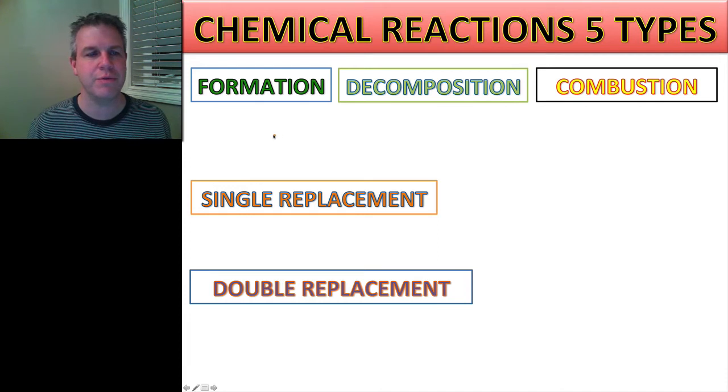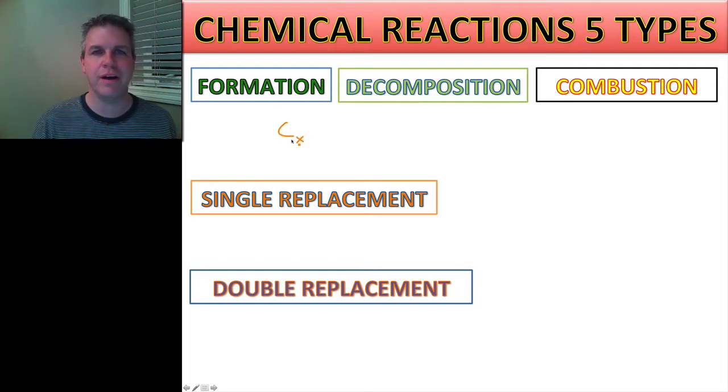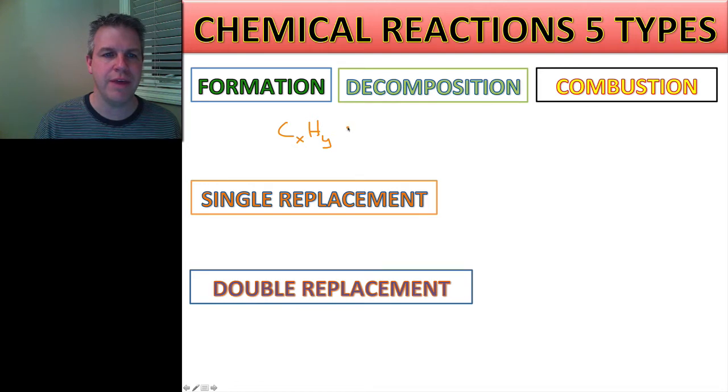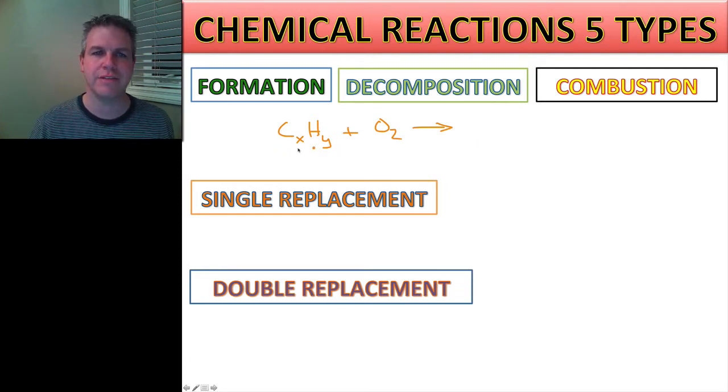So this is if I have a hydrocarbon - I have some kind of carbon with a number of carbons combined with a number of hydrogens. That's what these numbers represent, or the x and y represent. And if I add that to oxygen, I always get the same two products from that. So we have our reactants is some kind of a hydrocarbon, it's burning. We combine it with oxygen. That is always going to yield carbon dioxide and water, always.